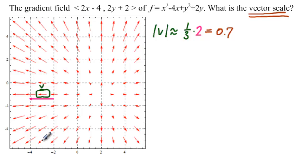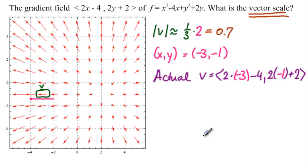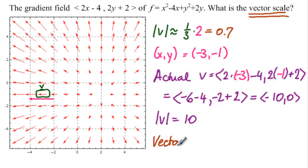And so what is that vector at? It's at the point x equal to -3, y equal to -1. So (x,y) equals (-3, -1). So let's calculate the actual v. Actual v is equal to 2 times -3 minus 4, and then 2 times -1 plus 2. So that's equal to (-10, 0). So the actual magnitude of v is 10. So what is our scale? 0.7 divided by 10 equals 0.07.